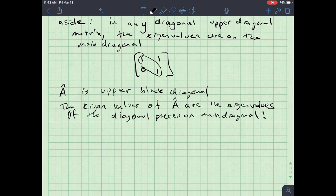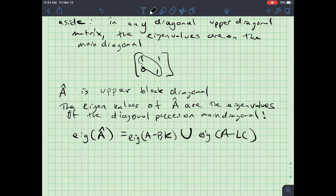And so the eigenvalues of A hat are equal to the union of the eigenvalues of A minus BK with the eigenvalues of A minus LC, which is pretty wild. So, the matrix is in block diagonal form. I also know, another aside here is that similarity transforms will preserve the system eigenvalues.